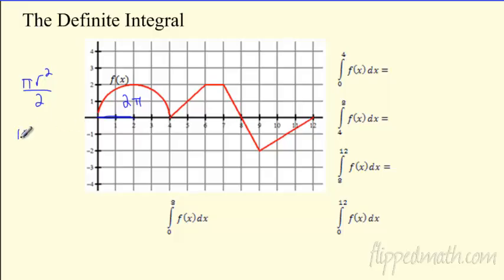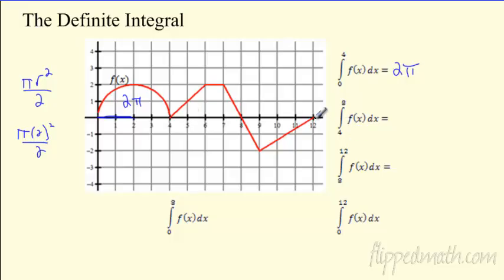If you plug the radius into the formula and divide by 2, the integral from 0 to 4 is going to be 2π. How about the next shape? From 4 to 8 — you can call this one a trapezoid, so I guess we are going to do trapezoids again.